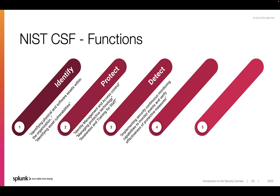If a cybersecurity event occurs, the respond function supports the ability to contain its impact. The organization will make sure to have a plan that includes, for example, forensic analysis, how to determine the impact of incidents, managing communications, and more. Mitigation activities to prevent the expansion of an event and to resolve it also fall in this area. Orchestration tools like Splunk SOAR would be helpful at this stage, since it can connect with several systems including network devices and automate incident response activities like blocking a URL, email, or IP address that has been identified as malicious or risky.